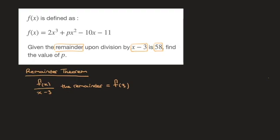And here's the trick. Although we can't calculate f(3) because we don't know what the coefficient p is, we do know that f(3) has to be equal to 58.